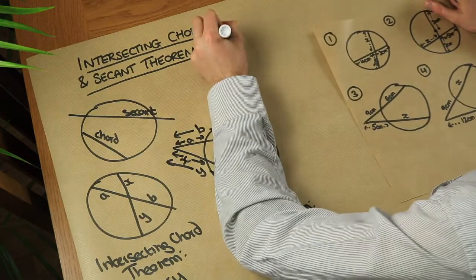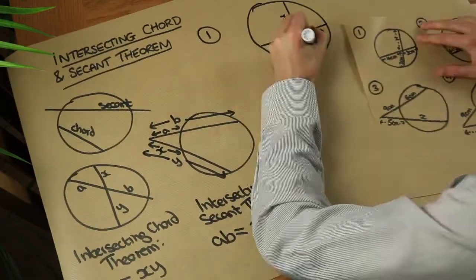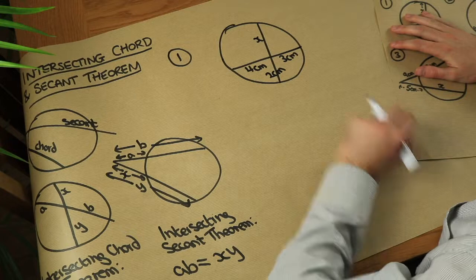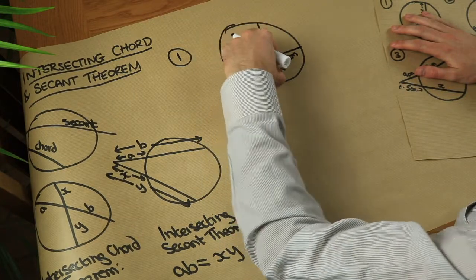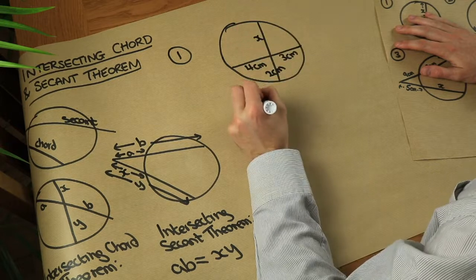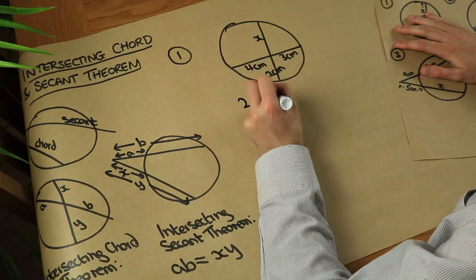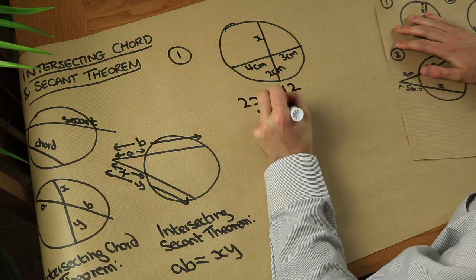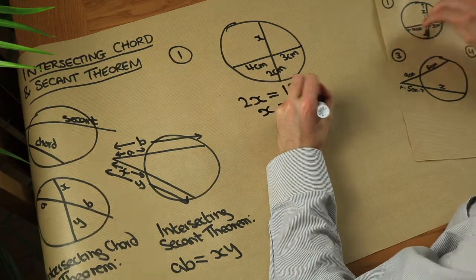Now let's use that for these particular problems. We've got two intersecting secants here, so we can just directly use the theorem. That times that is going to be equal to that times that. So we've got x times 2, so 2x, is equal to 4 times 3, which equals 12. So therefore x is equal to 6 centimeters.